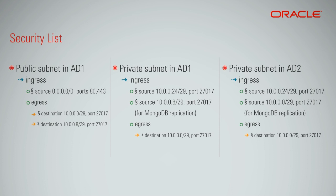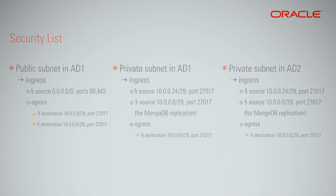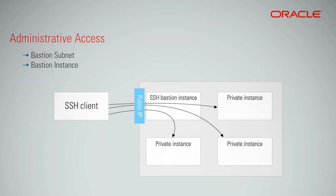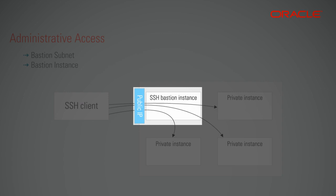The security list acts as a firewall to protect network access to a subnet. This is an example of a security list — we can see both the ingress and egress access control lists. In order to avoid direct public access to MongoDB, we will deploy a bastion instance in the bastion subnet to provide administrative access. This is also called a jump server in some on-premises data center deployment terms.